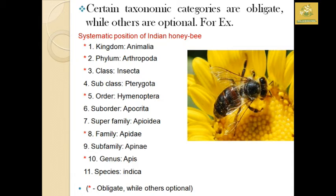While seeing the systematic portion of the Indian bee: Kingdom Animalia, Phylum Arthropoda, Class Insecta, Subclass Pterygota, Order Hymenoptera, Suborder Apocrita, Superfamily Apoidea, Family Apidae, Subfamily Apinae, Genus Apis, Species indica. Certain taxonomy categories are obligate while others are optional during classification.